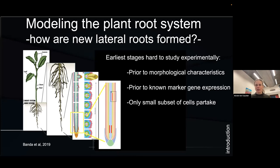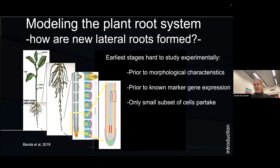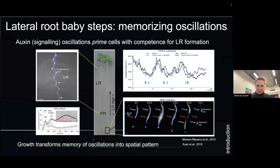These stages from the initial asymmetric division onward have molecular markers and are visible under a microscope. However, the processes that determine which cells are going to undergo this are much less understood. We don't have clear molecular markers and we also don't have a way to morphologically discern these cells from others.